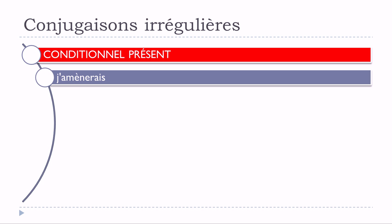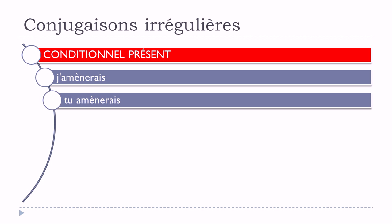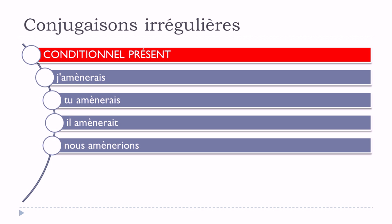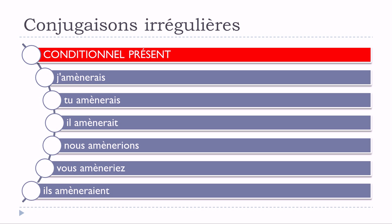Let's see now the conditionnel présent. J'amènerais, tu amènerais, il amènerait, nous amènerions, vous amèneriez, ils amèneraient. It's exactly the same thing — the modification affects all the forms, and it's the same modification as before: just put this accent grave on top of this E.